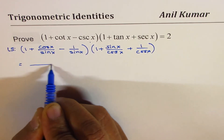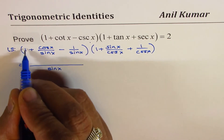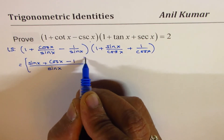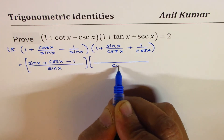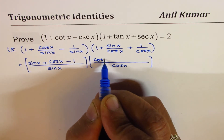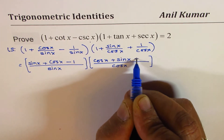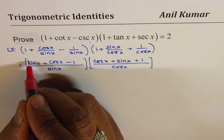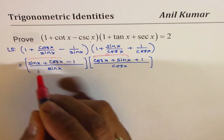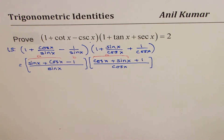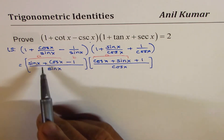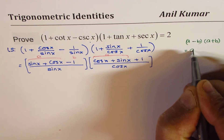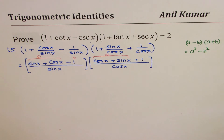From the first bracket, we can take sine x as common denominator, so we have sine x plus cos x minus 1 all over sine x. From the second bracket, we take cos x as common denominator, and we get cos x plus sin x plus 1 all over cos x. At this stage we could treat sine x plus cos x as 'a' and 1 as 'b', so when we multiply them it is kind of a minus b times a plus b, which equals a square minus b square.